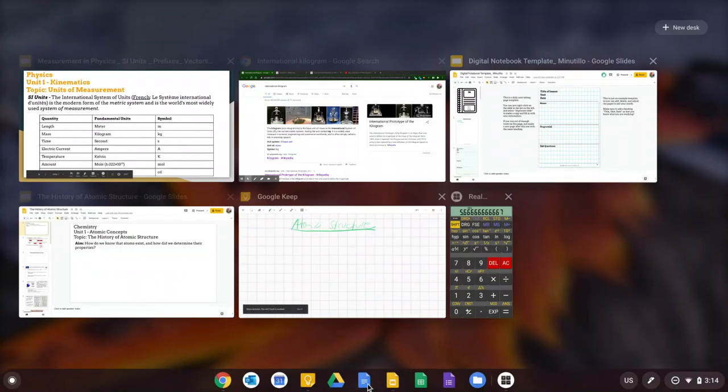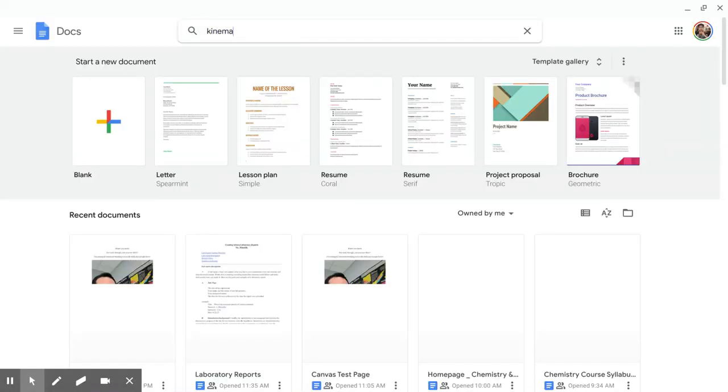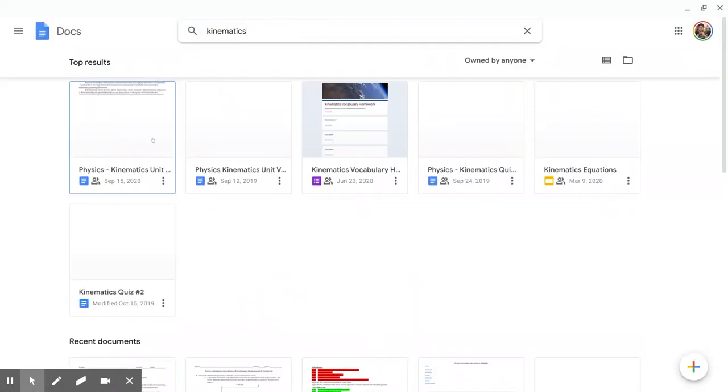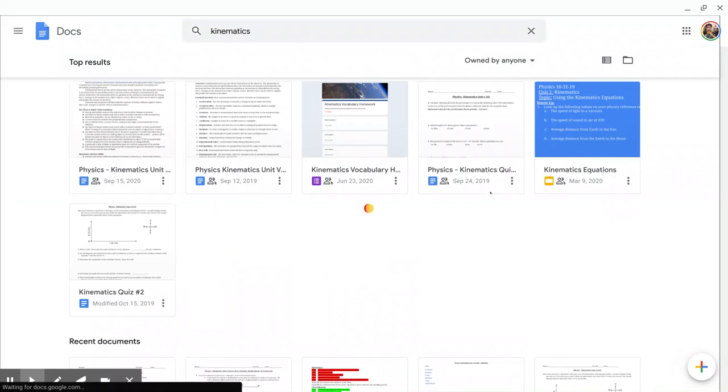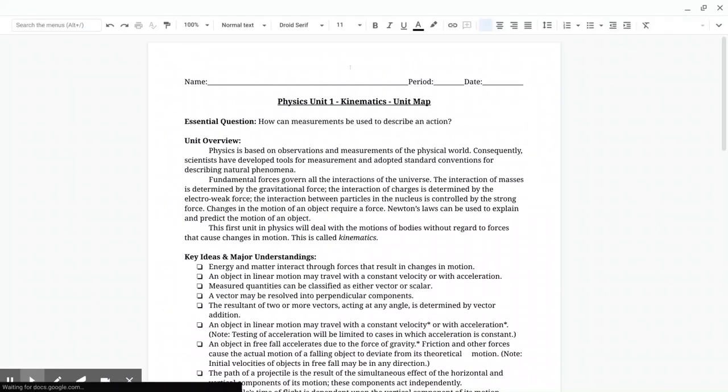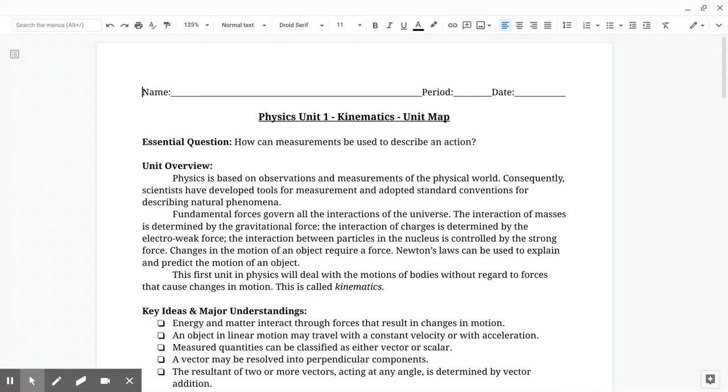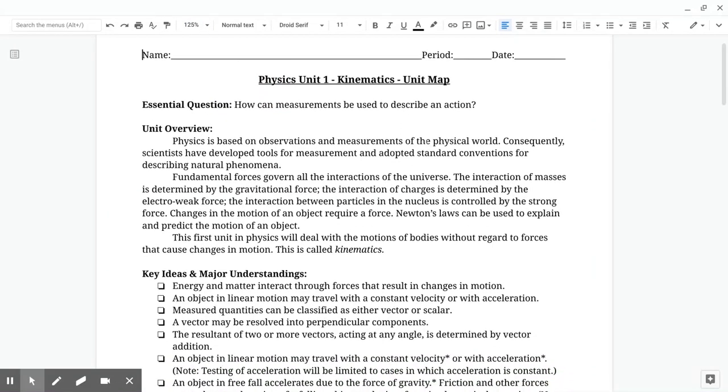As a matter of fact, I just realized I kind of would like to read the unit overview. So why don't we do that together really fast, just in case people happen to miss this. Let's read through the introduction to the unit really fast since this is the beginning. The essential question for this first unit in physics is, how can measurements be used to describe an action?